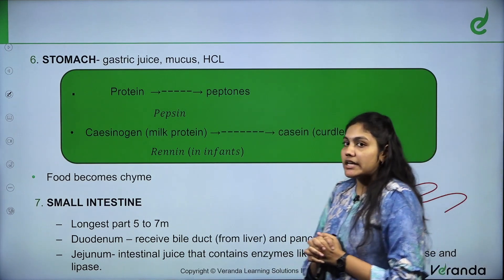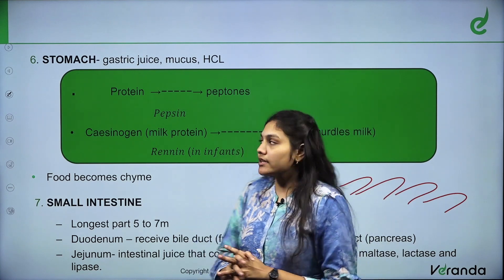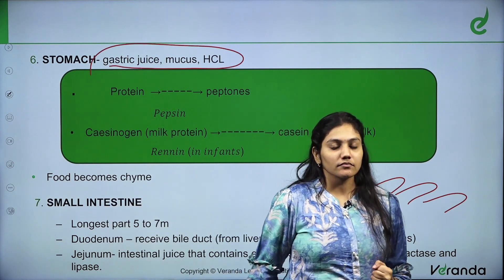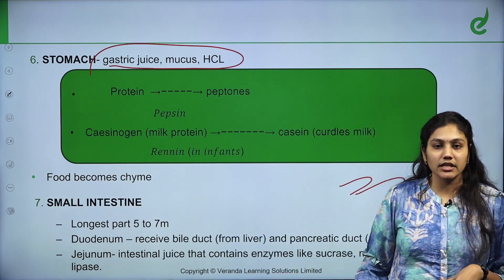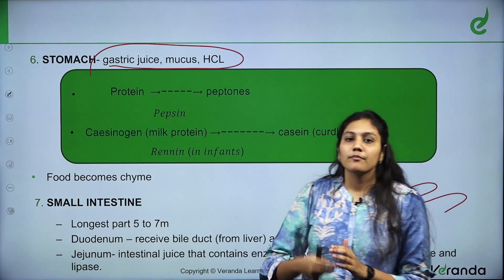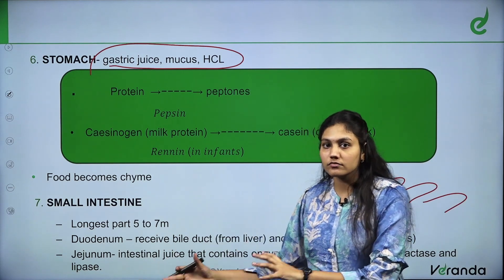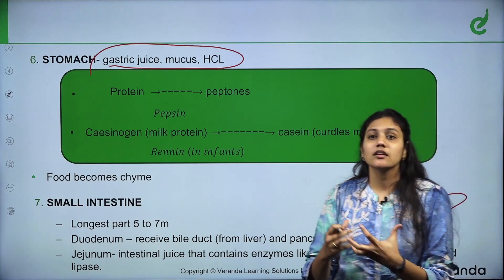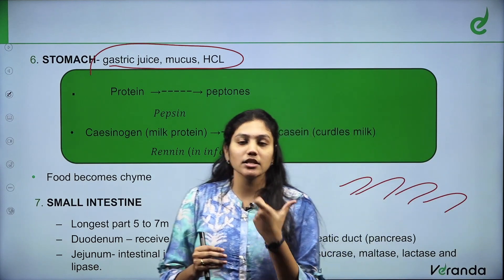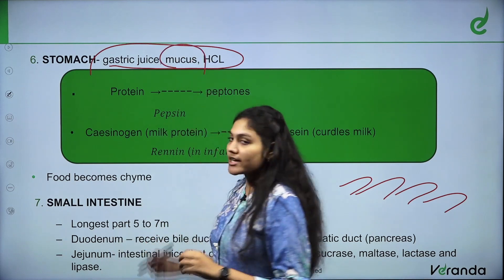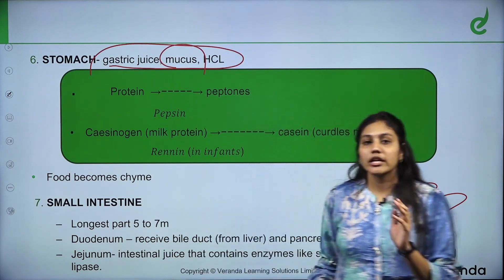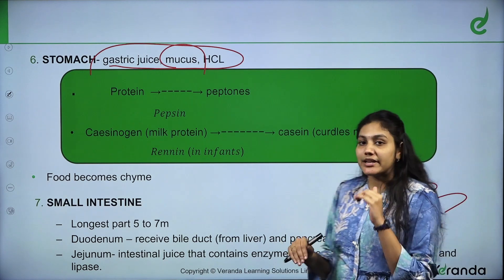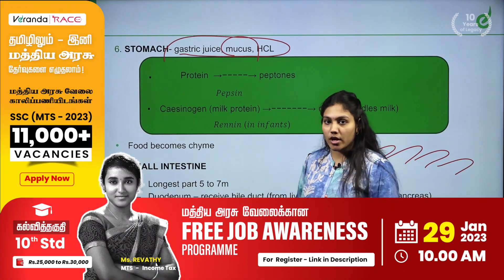In the stomach, what is present? Gastric juice, acid, and HCl. This causes the food to further break down — it results in breaking down of the food. In the acidity, the stomach protects itself with mucus. So, there is also mucus present. Different enzymes are present in the stomach.